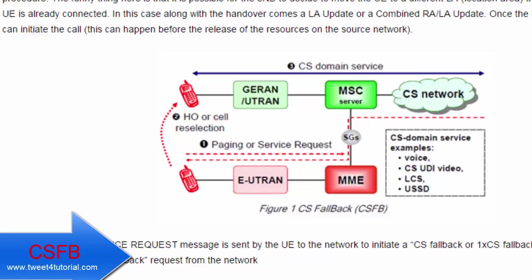If LTE has support for IMS calls, it will work as VoLTE. If LTE does not have support for IMS, then for MO or MT calls it will fall back — CS Fallback will be used. In order to be able to do CS Fallback, the UE needs to first attach to the network in a special way, called a Combined EPS/IMSI attach.